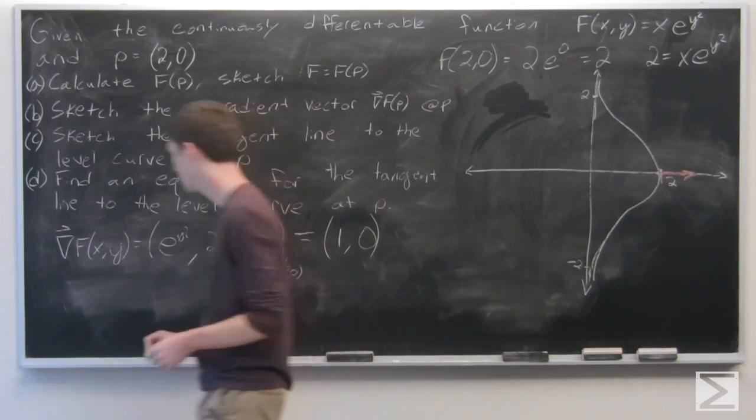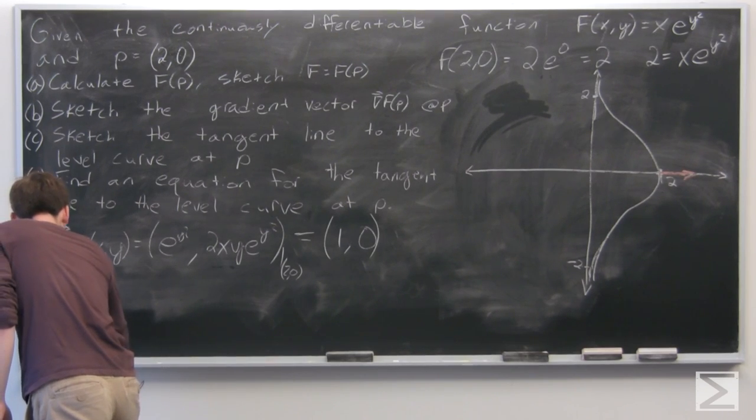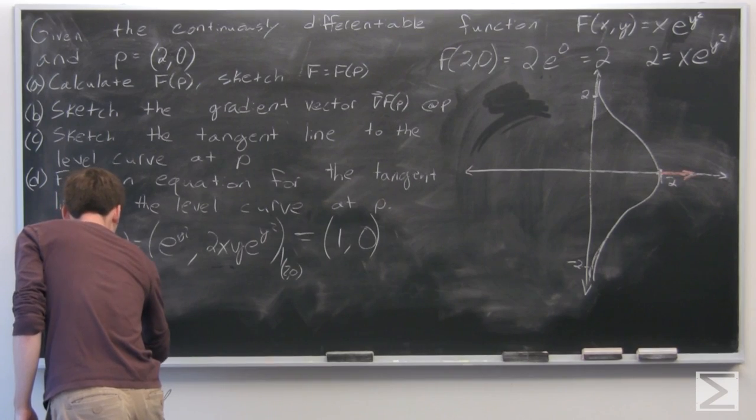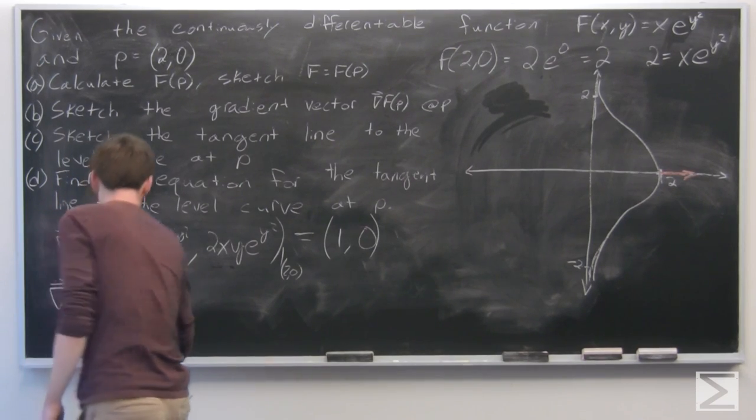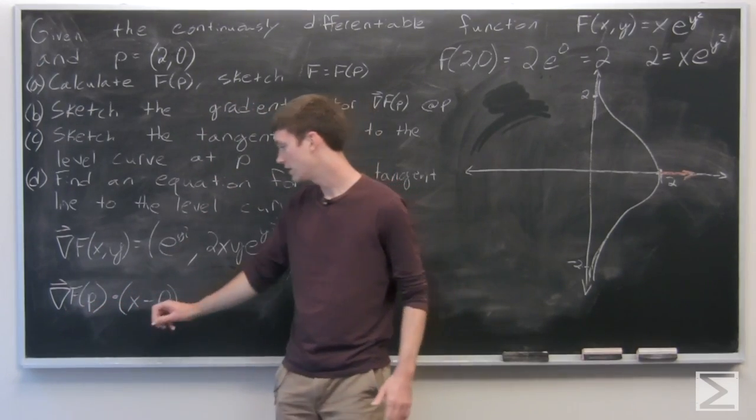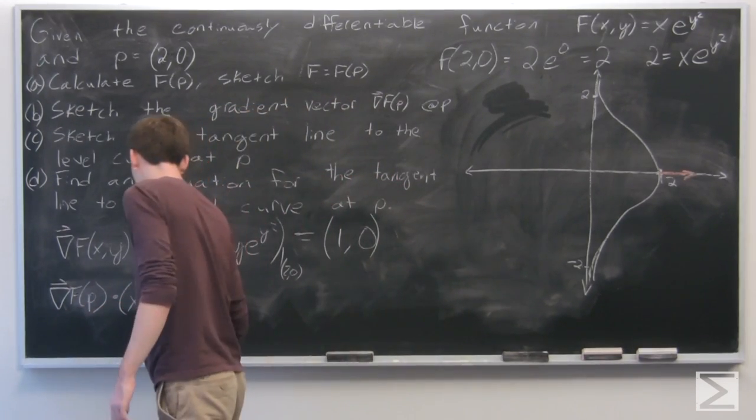which is gradient vector of f at p dotted with (x - p) = 0.